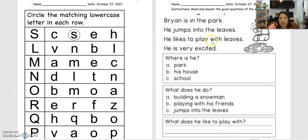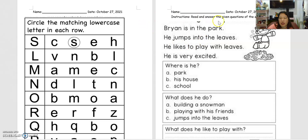This story is about Bryan. Let's start. Bryan is in the park. Where is Bryan? So he's in the park. He jumps into the leaves. As you can see these pictures of leaves, he likes to play with leaves. He is very excited.